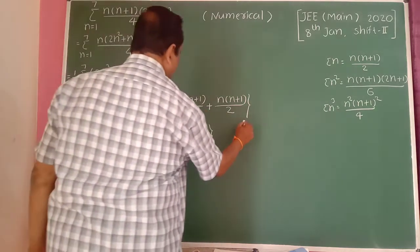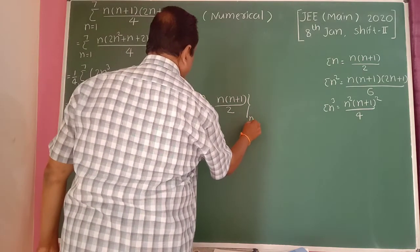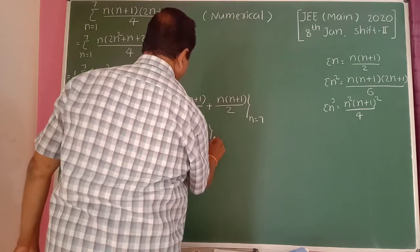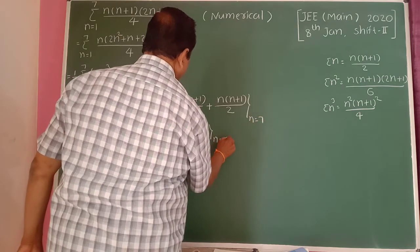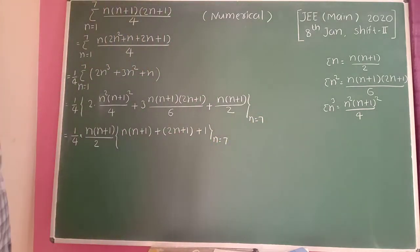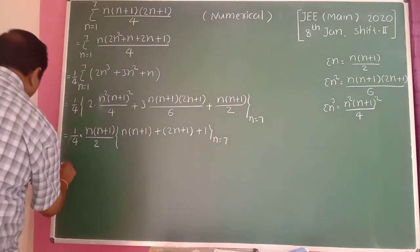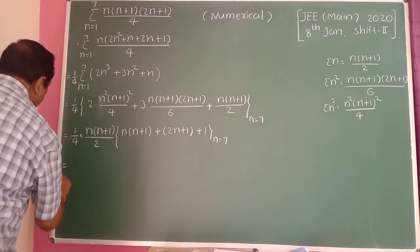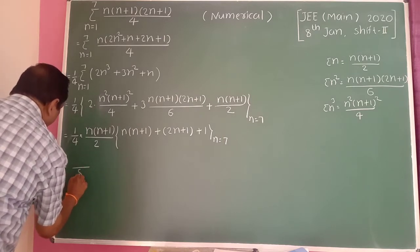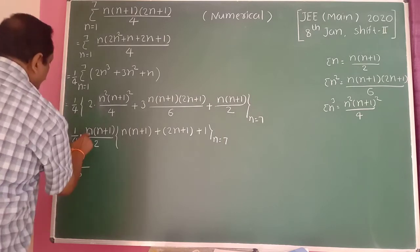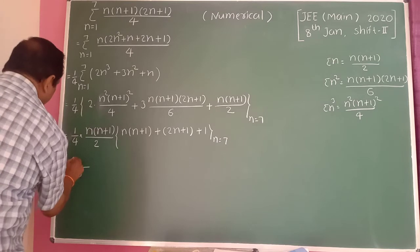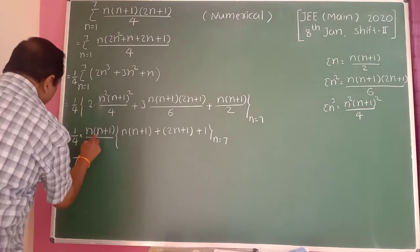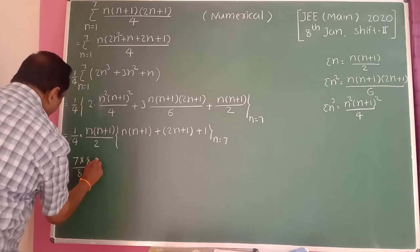Now substituting n equal to 7: 7 plus 1 becomes 8. Direct substitution gives 7 into 8 for the n into n plus 1 factor.